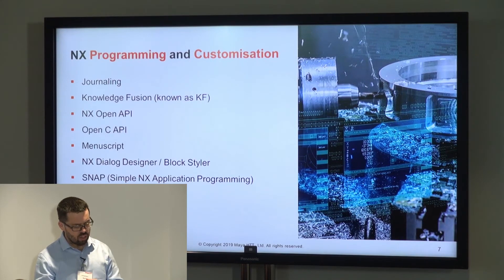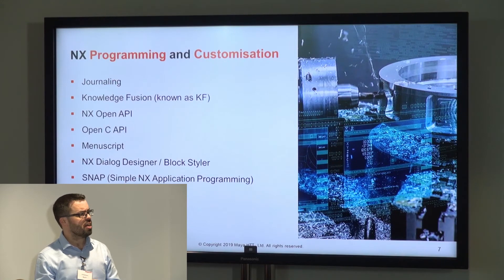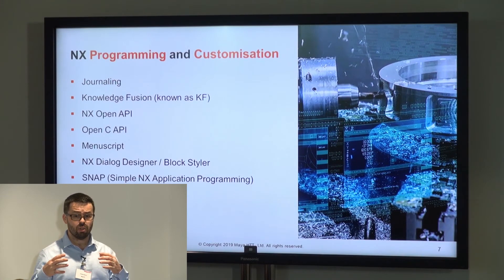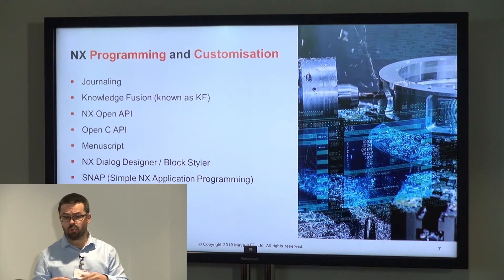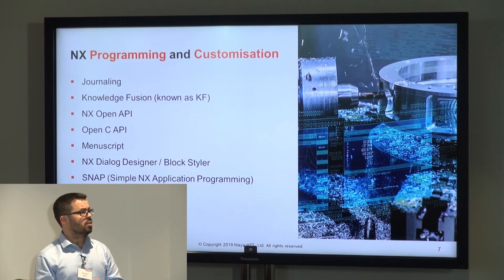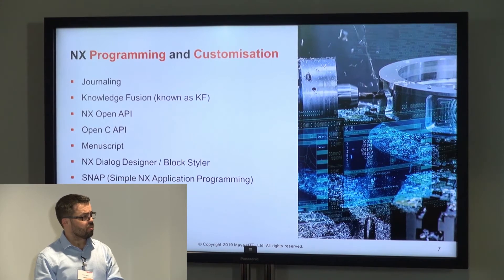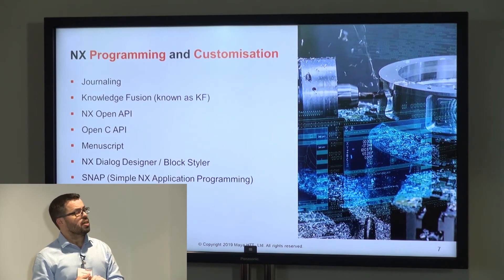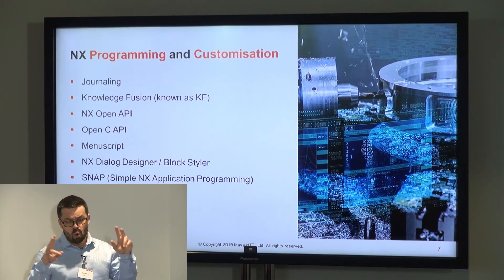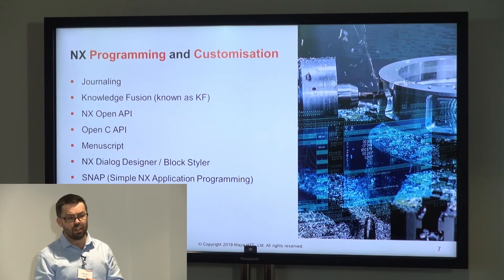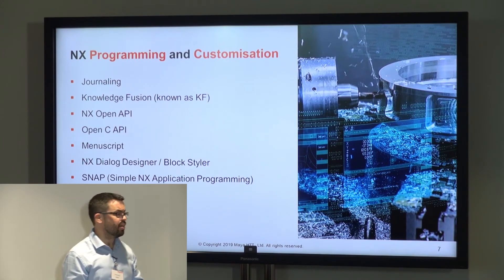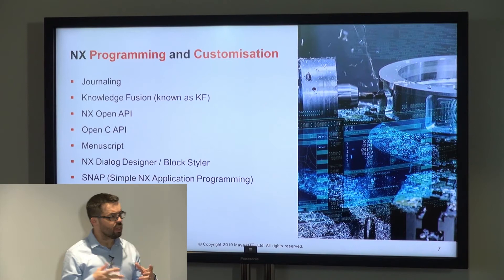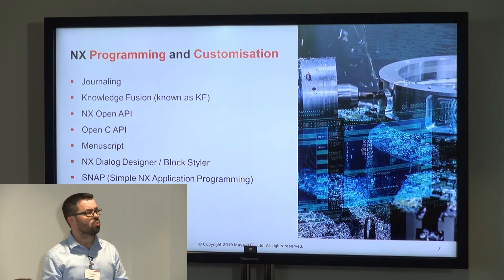There's Knowledge Fusion, often known as KF — mostly used on the modeling side for things like Checkmate, for validation of models. The NX Open API is the one we're going to talk about mostly; it's the more current one being actively developed at Siemens right now, and the one we rely on for most of the work we're doing.